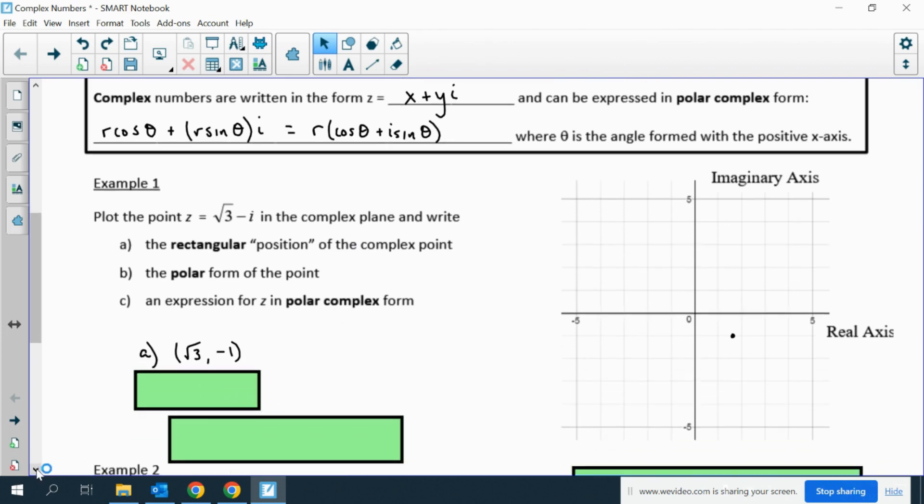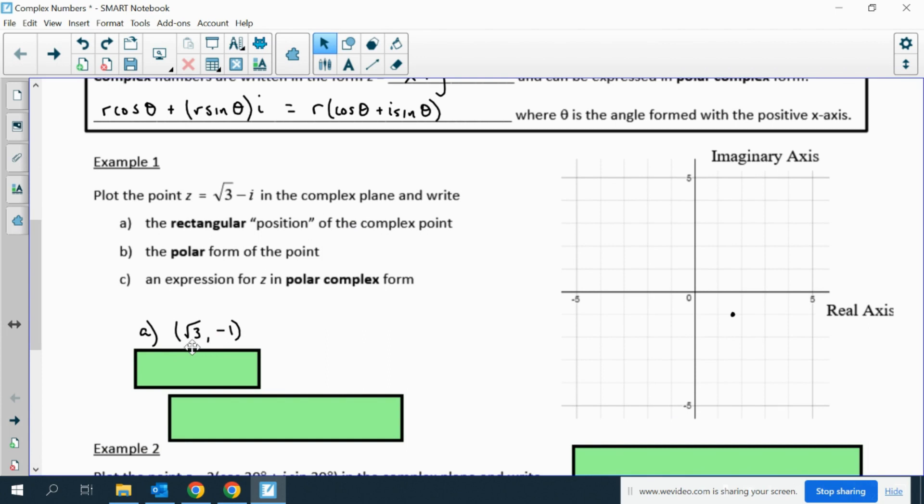The polar form of the point, well, you use x equals r cosine theta and y equals r sine theta. Root 3 squared plus negative 1 squared is 3 plus 1, which is 4, so the radius is 2.